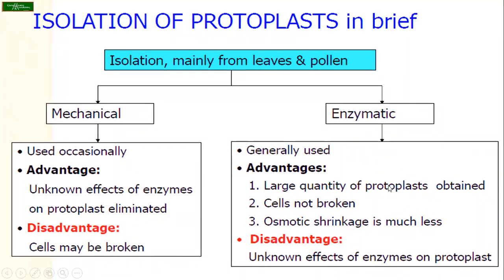This is about protoplast isolation in brief. You can use leaves, pollen, or any portion of the plant. There are two methods: mechanical and enzymatic. Mechanical is used occasionally — the advantage is that unknown effects of enzymes on protoplasts can be eliminated, but the disadvantage is that cells may be broken and it is laborious. The enzymatic method is generally used — large quantities of protoplasts can be obtained, cells are not broken, and there is no chance of osmotic shrinkage. The disadvantage is that unknown effects of enzymes on protoplasts will go undetected.